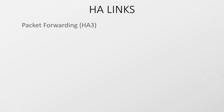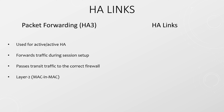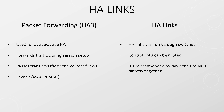When talking active-active, we also need to configure an additional link called HA3, which is a packet forwarding link. This is used when setting up sessions and passing transit traffic from one firewall to another. This link is entirely layer 2 and uses MAC-in-MAC encapsulation. There are no dedicated ports for this, so we need to configure an in-band port. The HA links can be run through external switches, and control links can be routed through multiple subnets, but where possible it's recommended to connect the firewalls directly together.